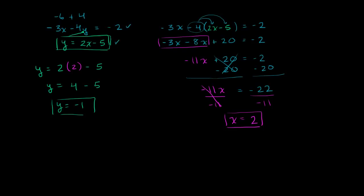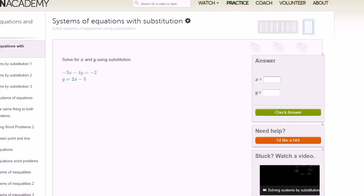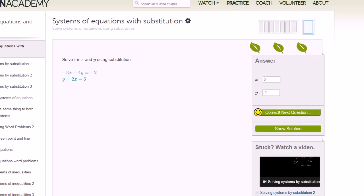Now we can type it in to verify that we got it right. X equals 2, y equals negative 1. Let's type it in: x equals 2 and y equals negative 1. Excellent! Now we're much less likely to be embarrassed by talking birds.